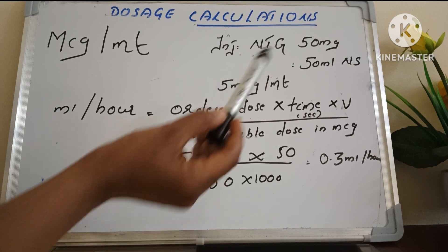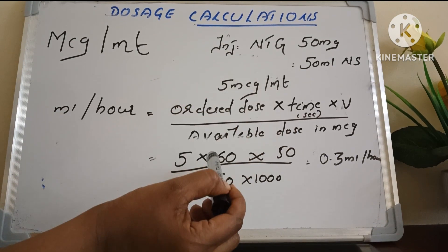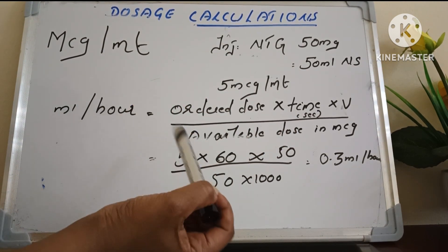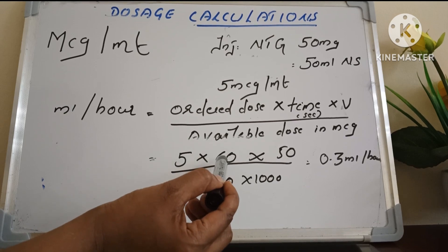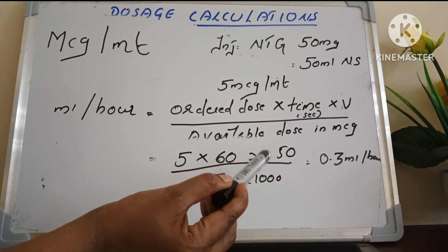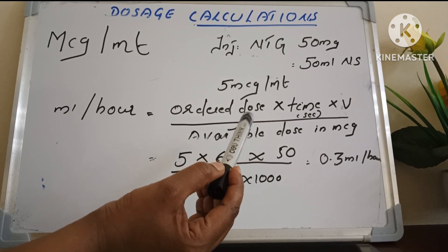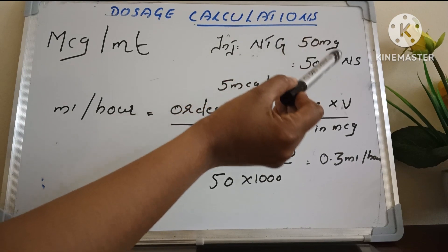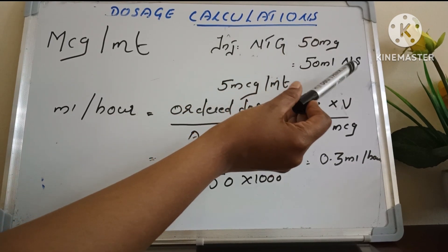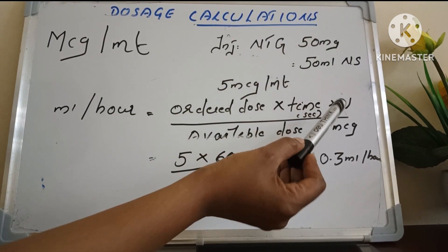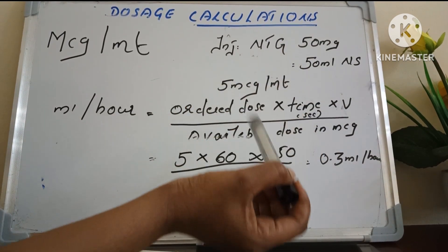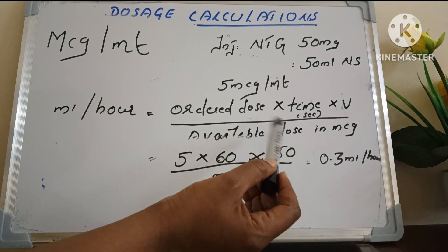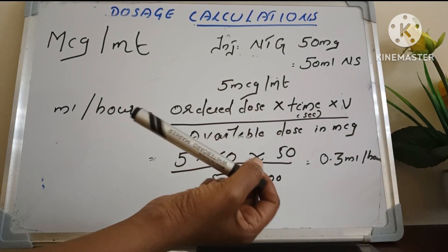So 5 multiplied by time — because we have to calculate ml per hour, 1 hour is equal to 60 minutes. So 60, multiplied by the volume — the medication has to be diluted in 50 ml saline, so that is the volume. So 50, divided by the available dose in microgram.